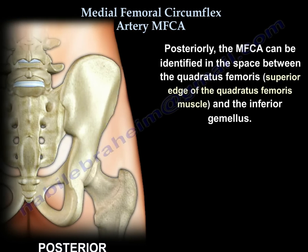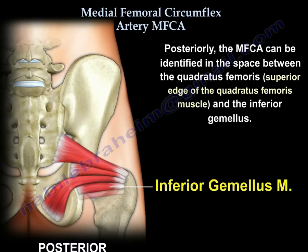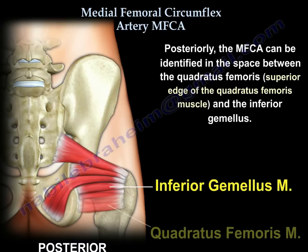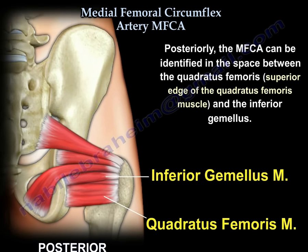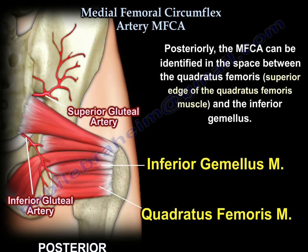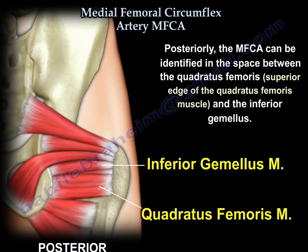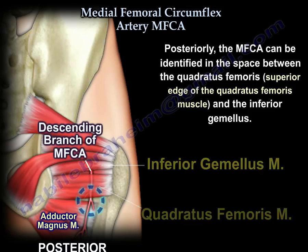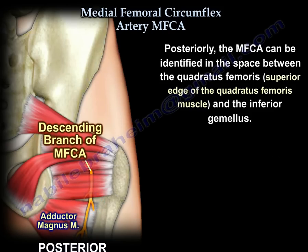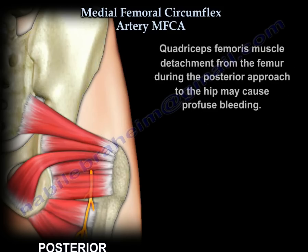Posteriorly, the artery can be identified in the space between the quadratus femoris and the inferior gemellus. Quadriceps femoris muscle detachment from the femur during a posterior approach to the hip may cause profuse bleeding.